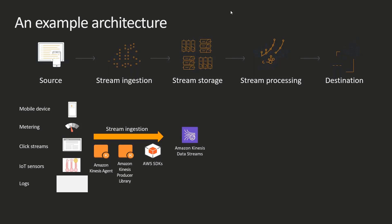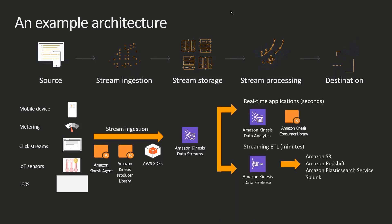The stream storage layer is Amazon Kinesis Data Streams. For processing, there are a number of options within the AWS family. You can do real-time processing in a matter of seconds using Amazon Kinesis Data Analytics — we have two offerings: Kinesis Data Analytics for SQL and Kinesis Data Analytics for Java. You could also use the Amazon Kinesis Consumer Library to automatically adjust to the scale of data coming into your Kinesis stream. There is also a no-code option with Amazon Kinesis Data Firehose, which lets you route data from Kinesis Data Streams to destinations such as S3, Redshift, and Splunk.